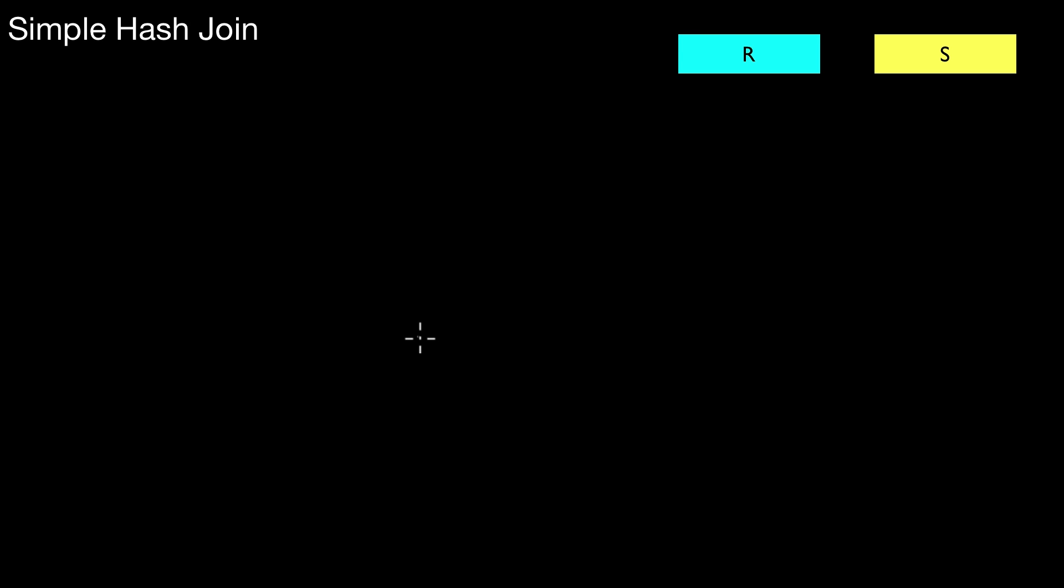So what is this simple hash join? Again, we have two input relations R and S and we have a joint predicate defined, which is an equi-joint predicate. So how does this work?